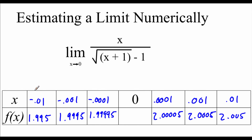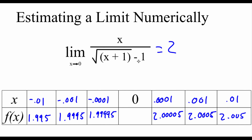Looking at both sides as we approach 0, our function values are getting really, really close to 2. So the limit of this function as x approaches 0 is 2. One important note: we actually can't plug 0 into this function — we'd get an undefined value. But that doesn't affect whether the limit exists; we can still figure out what the limit is.